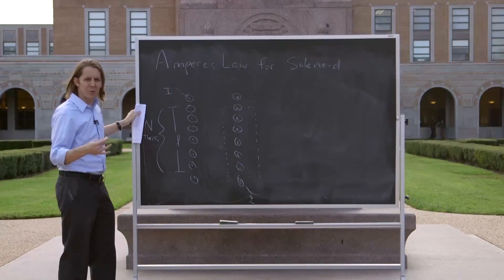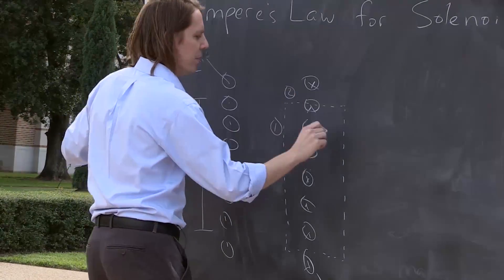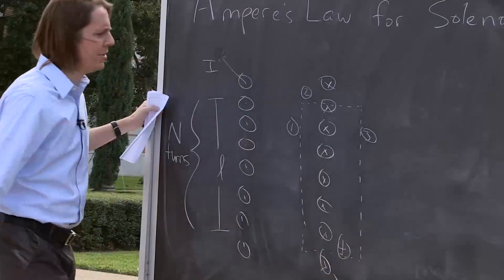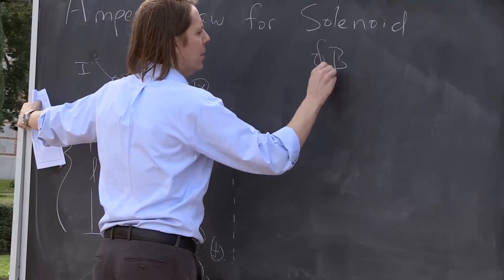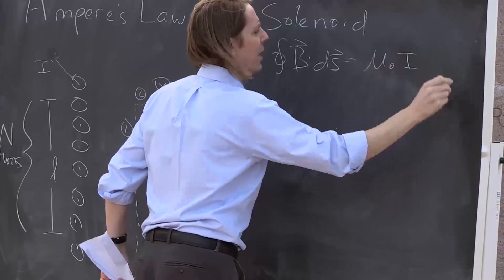And we're going to do what we always do when we're doing our nice symmetric vector calculus. We take the integral and turn it into several terms, one for each side of this Amperian rectangle here. And we say, we know the real thing we're looking for is the integral of B dot dS equals mu naught I.